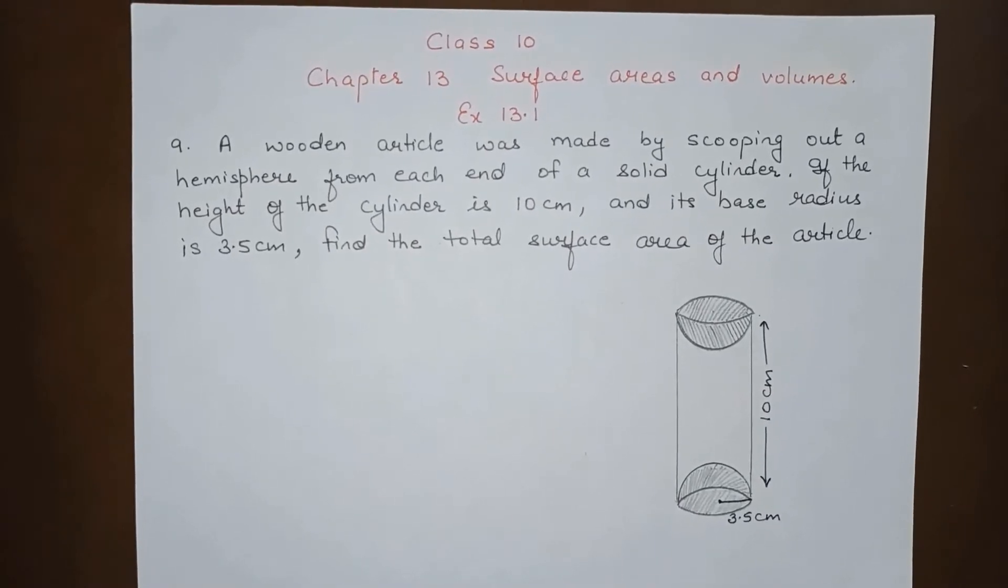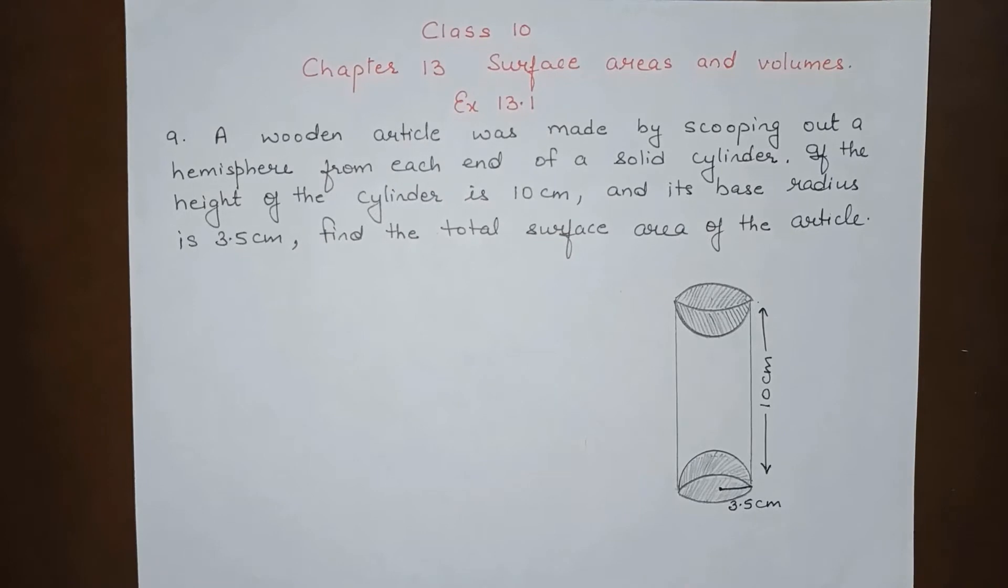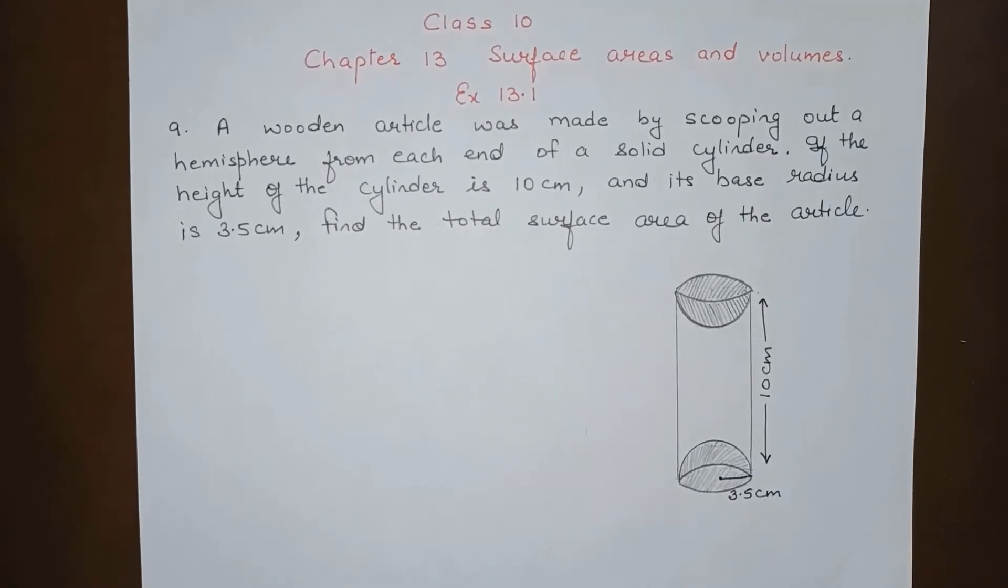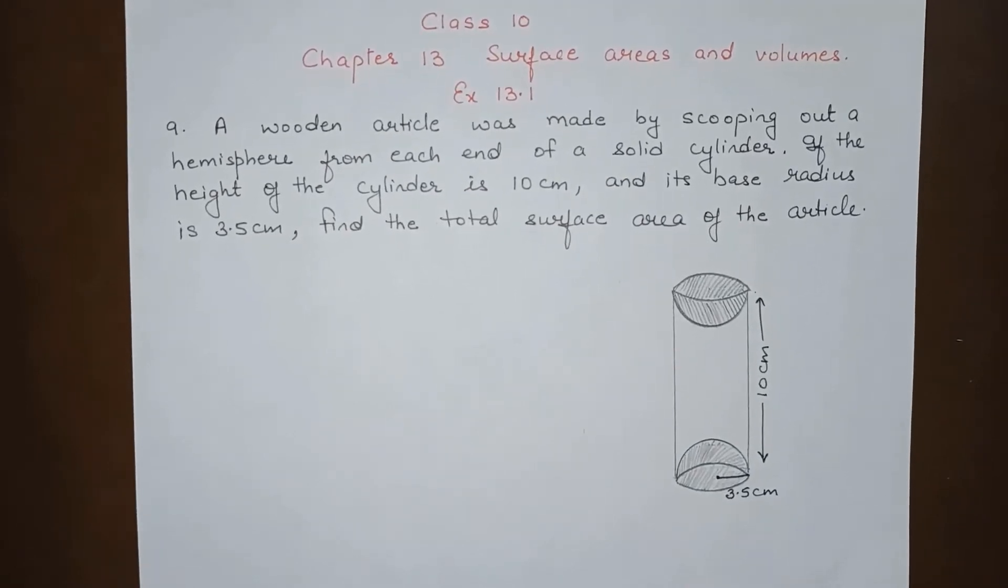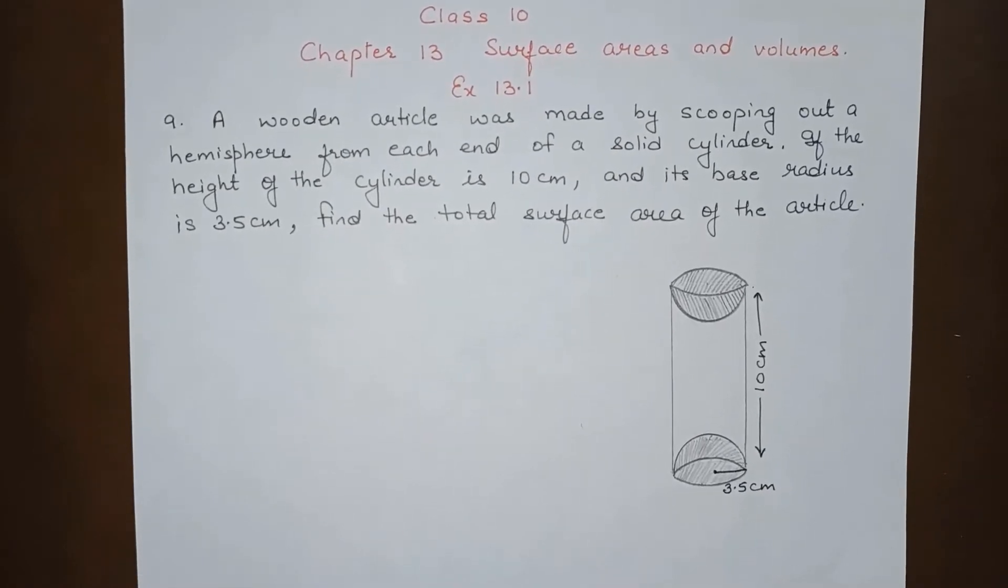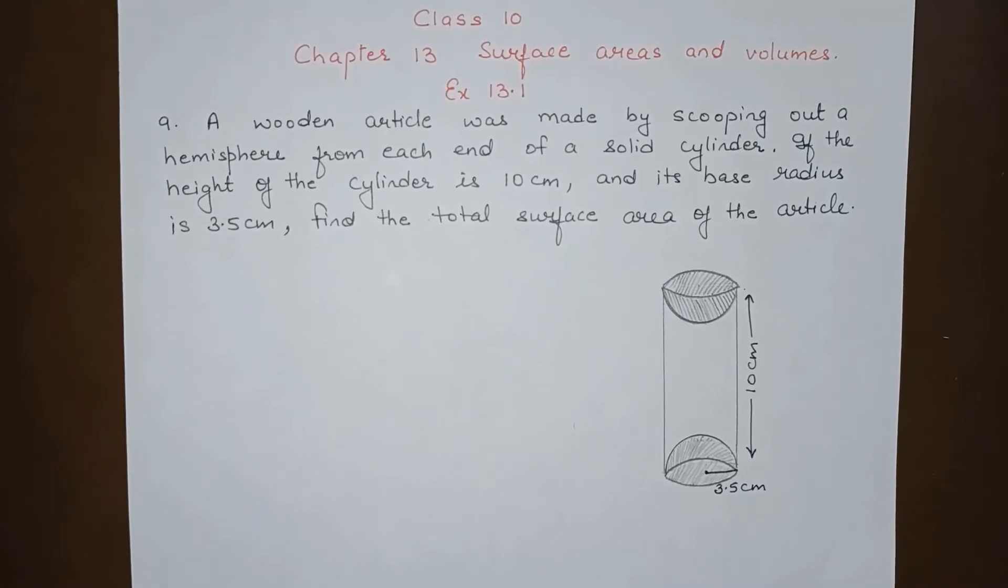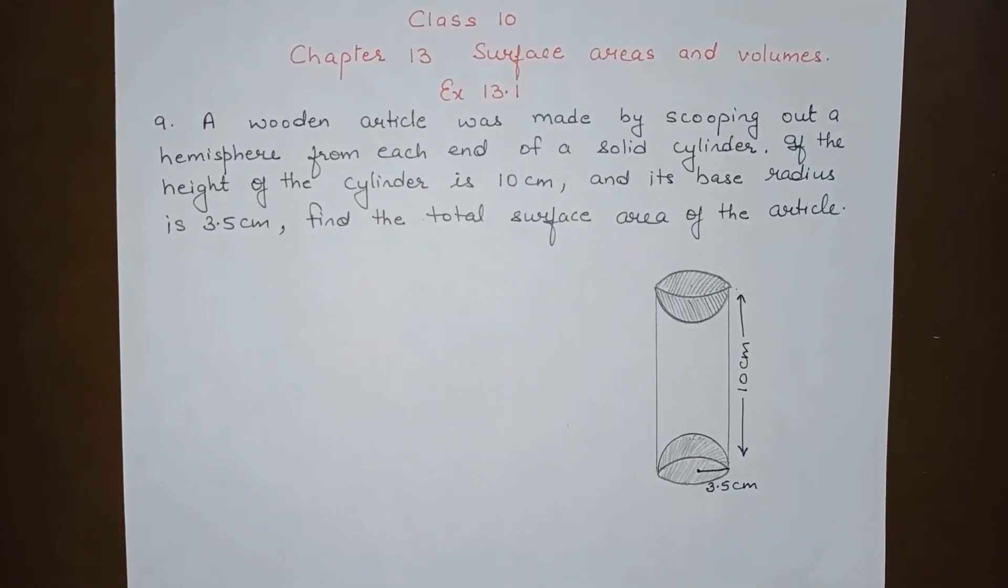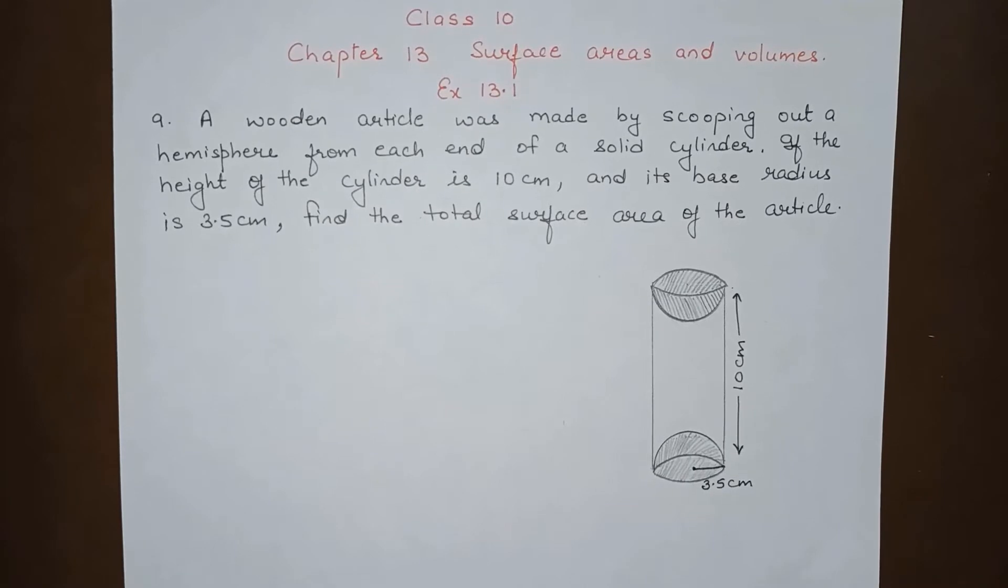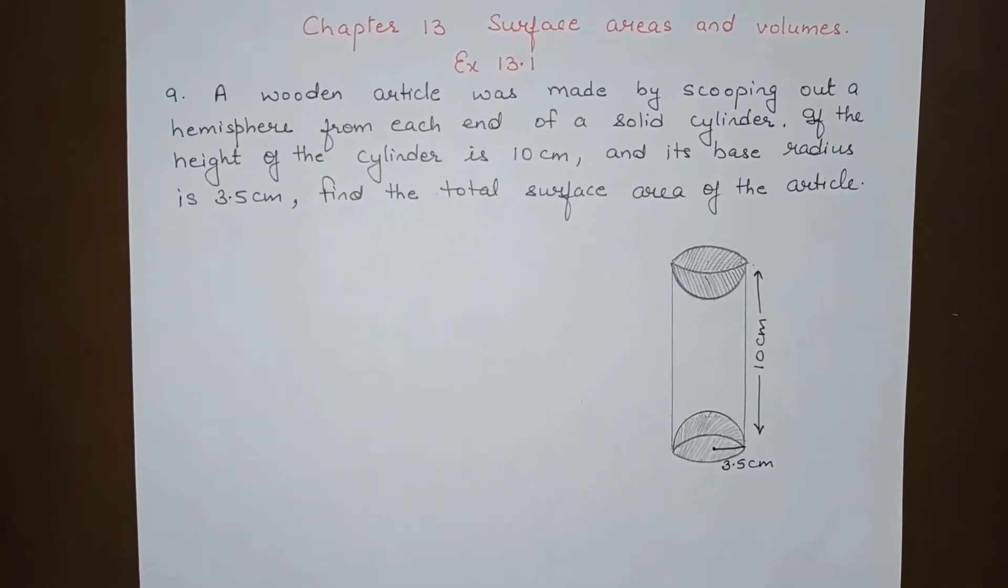Hello everyone, today we will do Class 10 Chapter 13, Surface Areas and Volumes, Exercise 13.1, Question Number 9. A wooden article was made by scooping out a hemisphere from each end of a solid cylinder. If the height of the cylinder is 10 centimeters and its base radius is 3.5 centimeters, find the total surface area of the article.